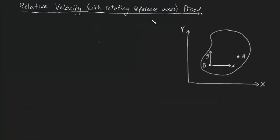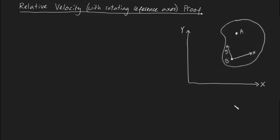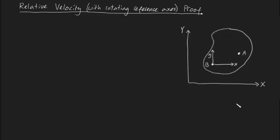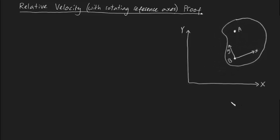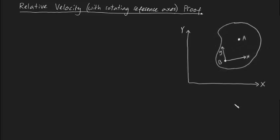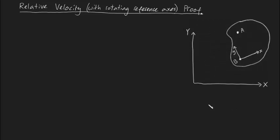G'day guys, in this video I'm going to be talking about relative motion, and in particular relative motion when we're dealing with rotating reference frames. So what does that mean? Well, let's consider this little animation I'm playing right now. We'll notice that a point A is free to move on a plate that itself is moving and rotating. So my question to you is: what is an expression we can derive to find the absolute velocity of point A?